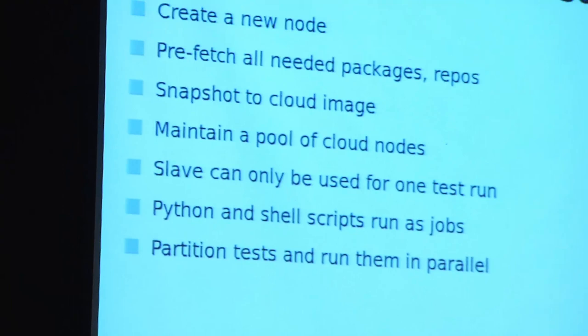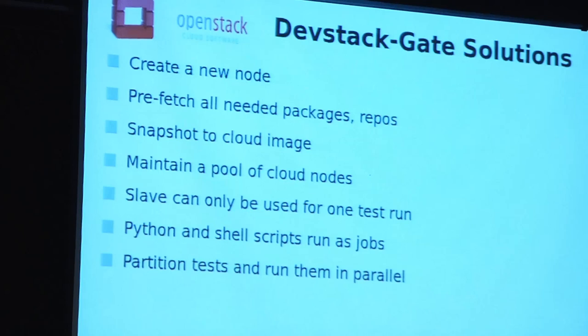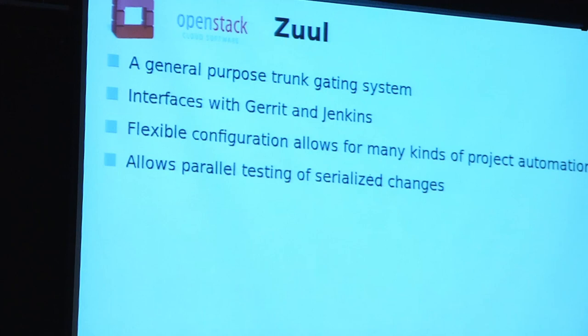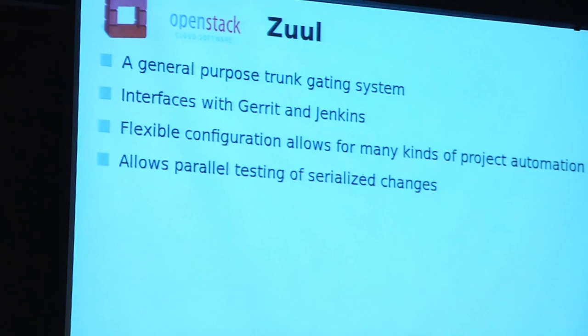The way this actually works is we keep a pool of pre-created nodes. We create a node, basically pre-fetch everything it's ever going to need from the internet, cache them locally, snapshot that to a cloud image, then make a pool of nodes based on that image. We update those base images from time to time. We use each of those nodes one and only one time — because once you've installed a cloud on an image it's probably been hosed. There's no way to tell anything about state anyway — it's a cloud, so you just delete it and make another one.